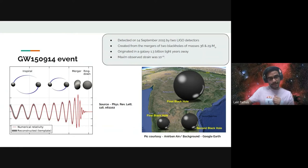It was created by the merger of two black holes of 36 and 29 solar masses each, in a galaxy 1.3 billion light years away. The maximum strain observed was on the order of 10^-21, which amounts to changing the distance between the Earth and the sun by the length of an atom. Just imagine how small that is.